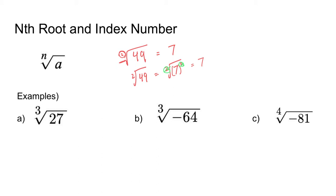We're going to look at other values. For example, we have the third root of 27. We're thinking: what number times itself 3 times will give me 27? I know 3 to the third power equals 27. So the third root of 3 to the third power is just in fact 3. So the third root of 27 equals 3 because 3 to the third power equals 27.